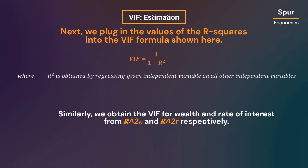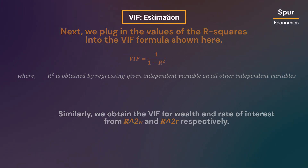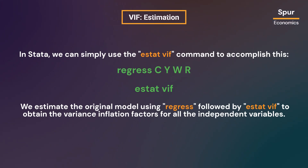Similarly, we obtain the VIF for wealth and rate of interest from R-square W and R-square R respectively. In Stata, we can simply use the estat vif command to accomplish this. We estimate the original model using regress, followed by estat vif, to obtain the variance inflation factors for all the independent variables.